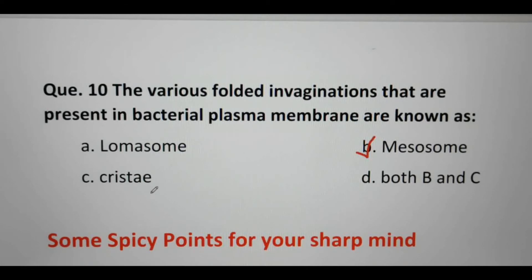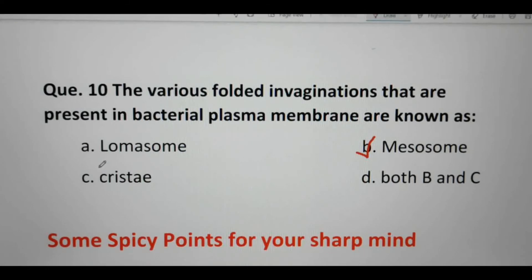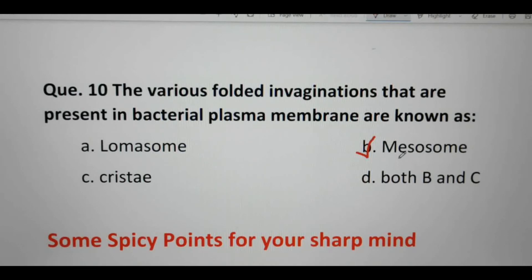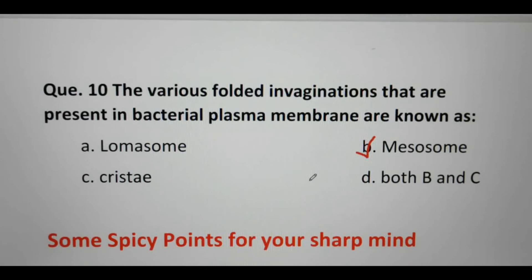Cristae are invaginations of the mitochondria, and mitochondria belong to eukaryotes. Another question that can be formed: Cristae is similar to which structure in bacteria? Its function in bacteria corresponds to Mesosome. Mesosome generally performs DNA replication and respiration functions, which is why it is analogous to Cristae.